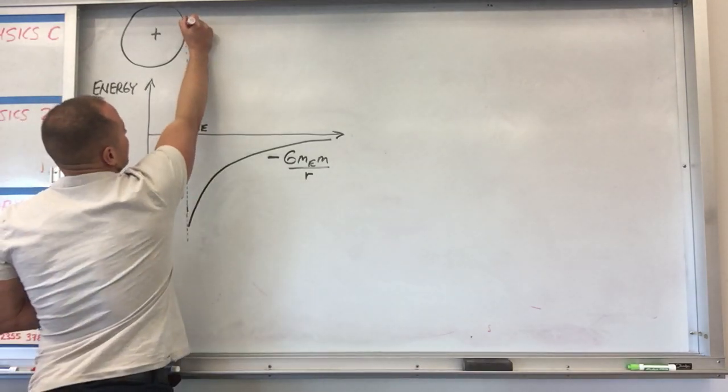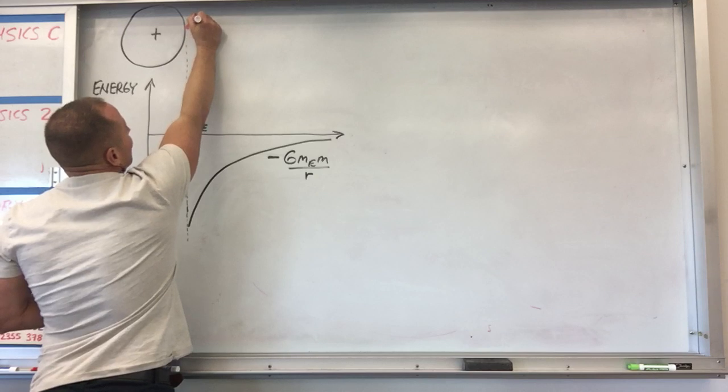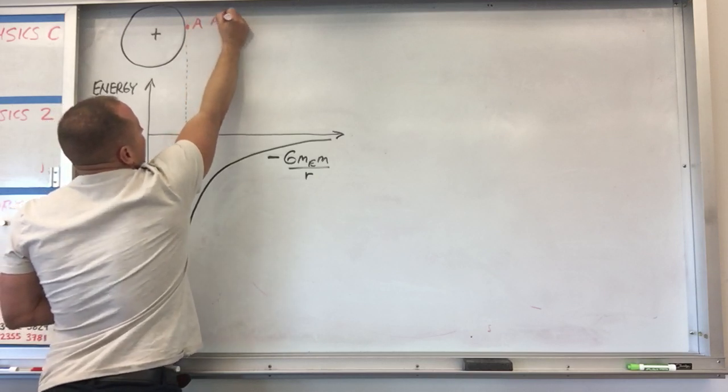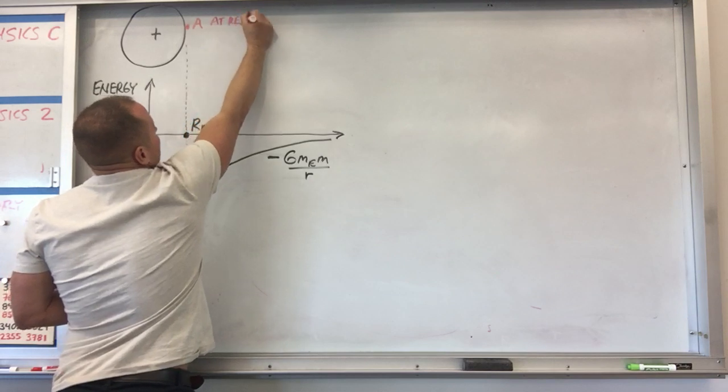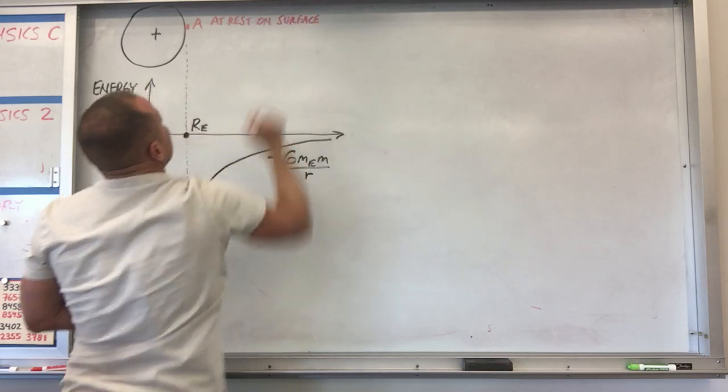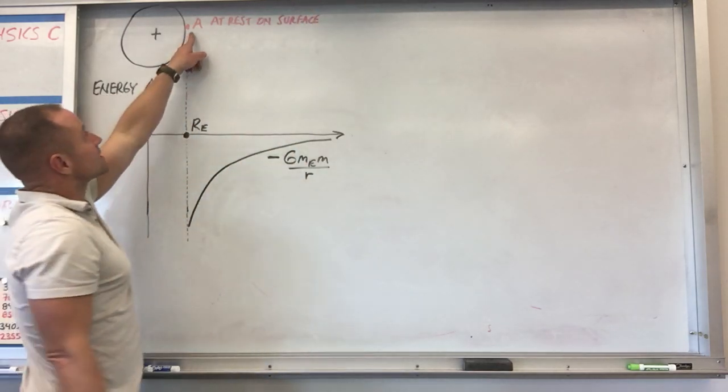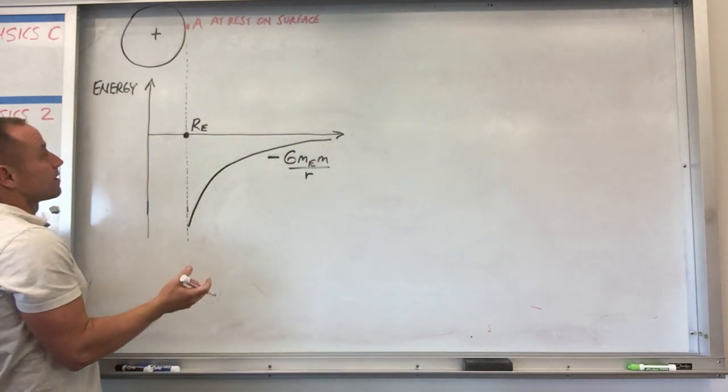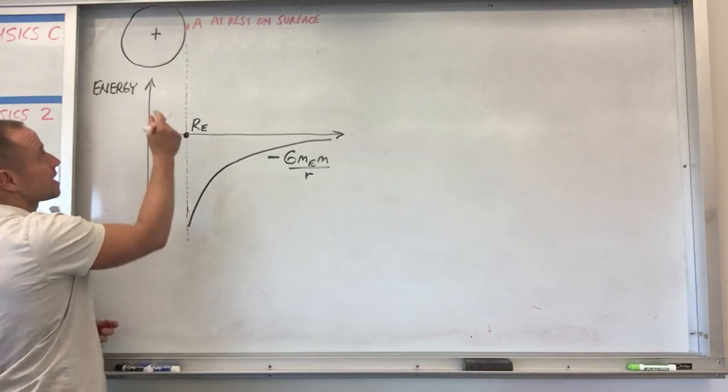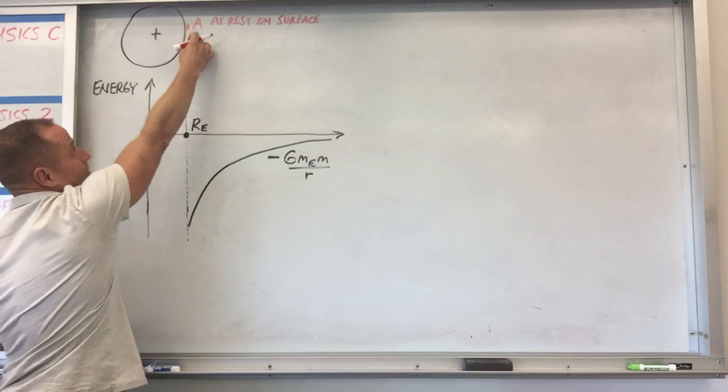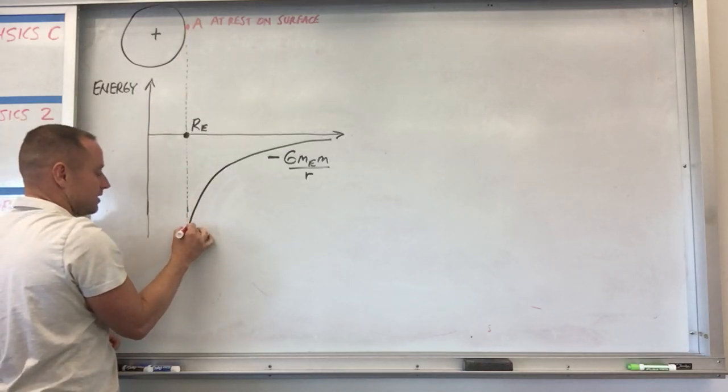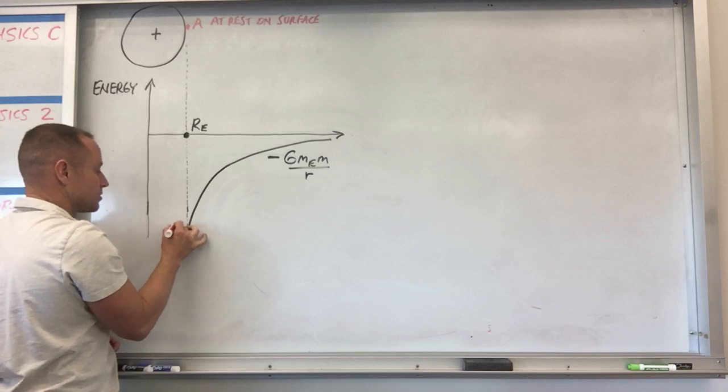We're going to think about a couple different objects on the Earth's surface. One's going to be object A, and that thing is going to be at rest on the surface. What that means if it's at rest is it doesn't have kinetic energy, so all of its energy, its total energy, is just going to be its potential. So you go out to the radius of the Earth and you just say that it has exactly this much potential energy.